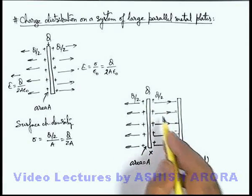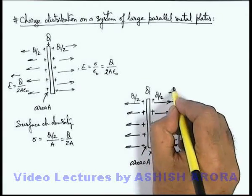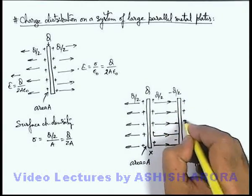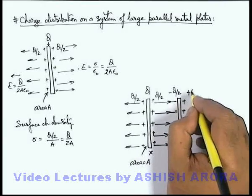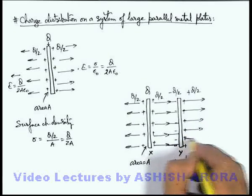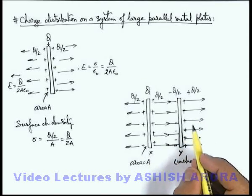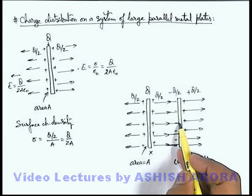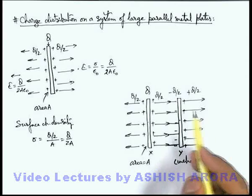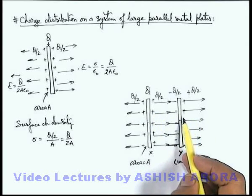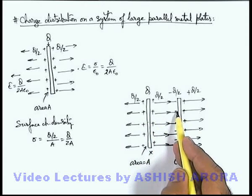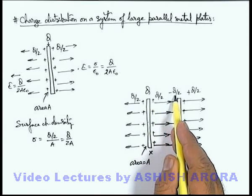To absorb the whole electric flux, exactly minus Q/2 charge is induced on the front face of plate Y. Since plate Y is neutral, exactly plus Q/2 is induced on its other face, which further originates the same amount of electric lines in the other direction. We can say no net electric field exists in the volume between the metal plates. So whenever an uncharged plate is kept in front of a charged plate, the facing surface always carries an equal and opposite induced charge.